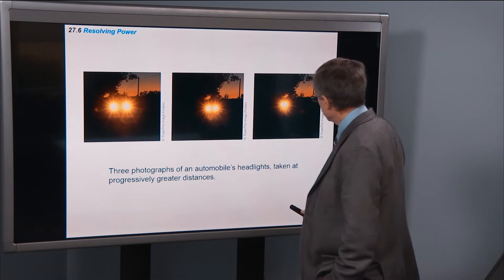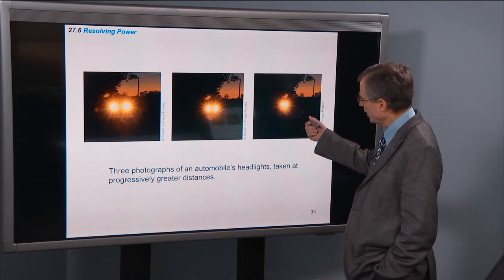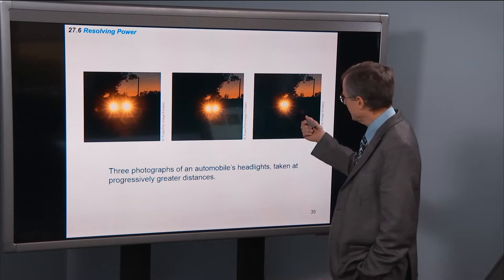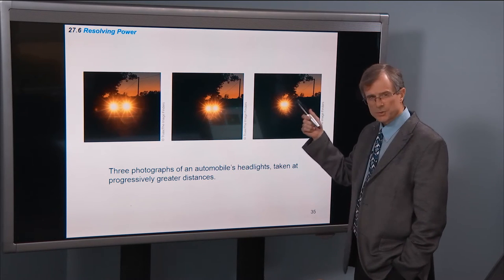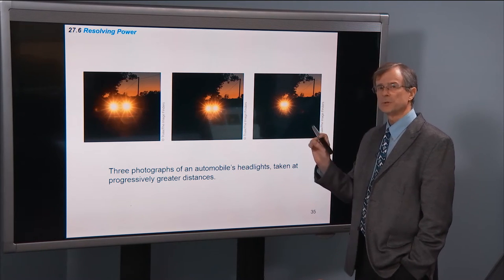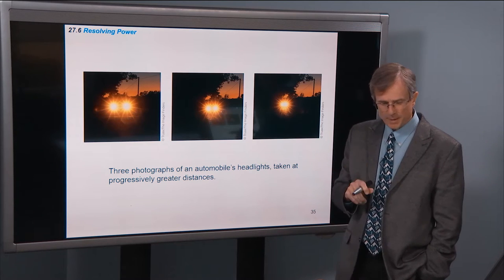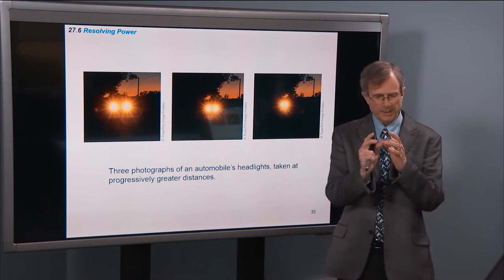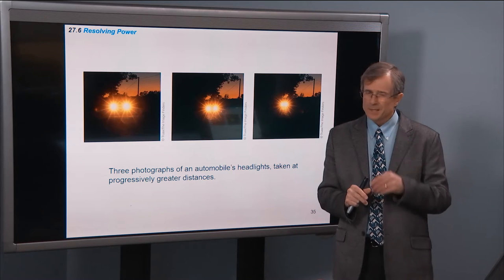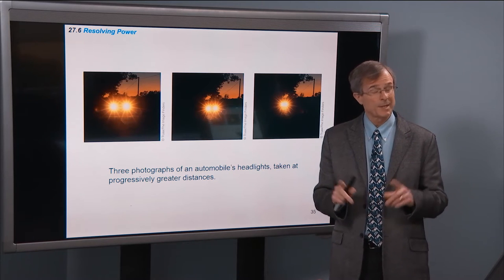Here's a car approaching from far away, closer and closer. When it's far away, those two headlights seem to merge together. And this happens, and you might say it's because the headlight has a certain size. And I say it also happens for point objects. It happens for stars.